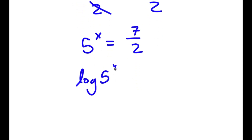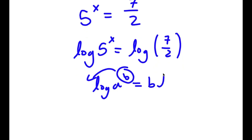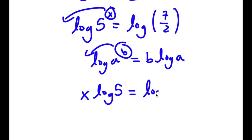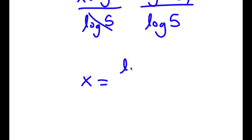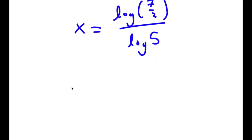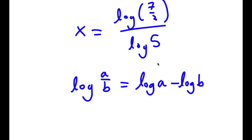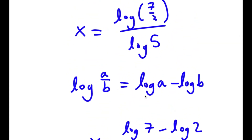Taking the log on both sides, I have log 5 to the power of x is equal to log of 7 over 2. Since log a to the power of b equals b times log a, I can move x to the front: x times log 5 is equal to log of 7 over 2. Dividing both sides by log 5, I get x is equal to log of 7 over 2, all over log 5. Now, log a over b equals log a minus log b, so log of 7 over 2 equals log 7 minus log 2, all over log 5.